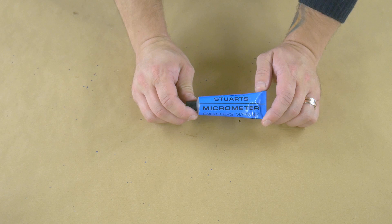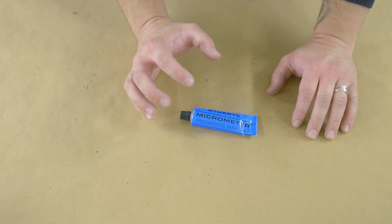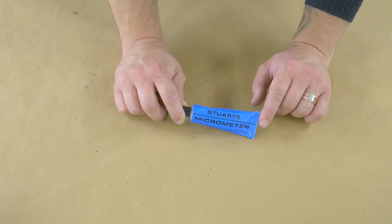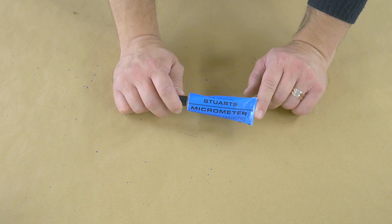Last time we did a video about blue, it was this stuff. This is Stuart's micrometer engineer's marking blue. I had that in a little round tin, a little round grey tin, and I hadn't until that point bought a tube. I would always use the tins.